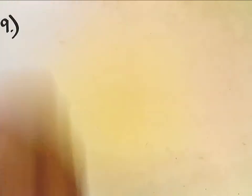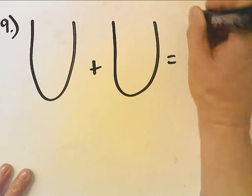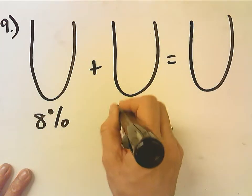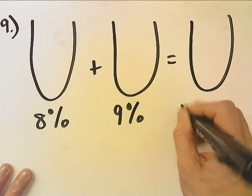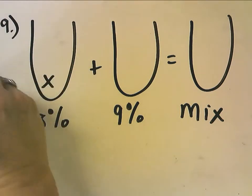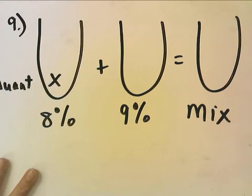So number 9 says, Otis has a total of $12,000 invested in two accounts. One account pays 8% and the other pays 9%. So I know I am mixing an 8% investment with a 9% investment to get a mixture. I don't know how much of the 8% I'm investing, so that's my quantity equation.